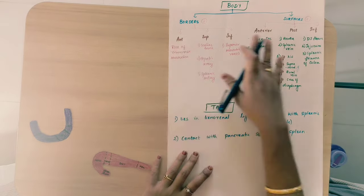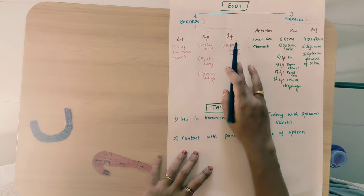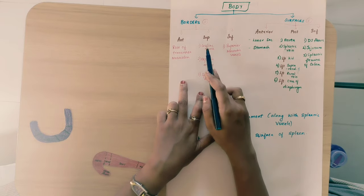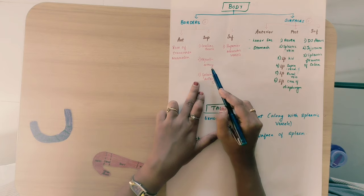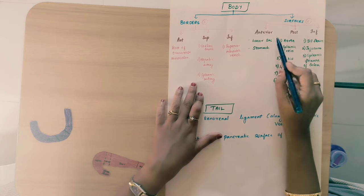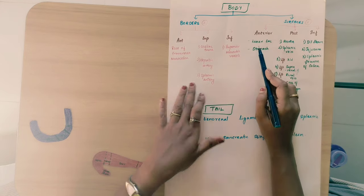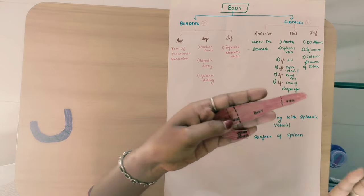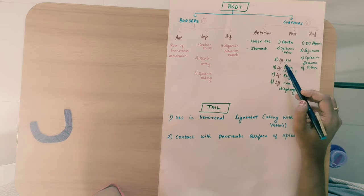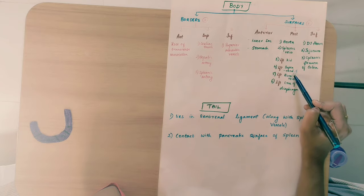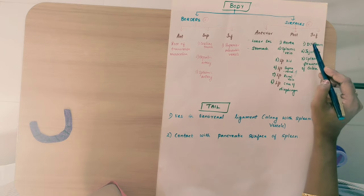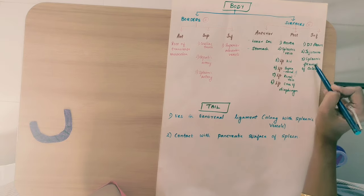So in the body there are three borders and three surfaces: superior, anterior, and inferior borders. The superior border relates to the celiac trunk (hepatic and splenic arteries), the anterior border to the root of the transverse mesocolon, and the inferior border to the superior mesenteric vessels. The anterior surface relates to the stomach and lesser sac; the posterior surface to the aorta, splenic vein, left kidney, left suprarenal gland, left renal vein, and left crus of the diaphragm; and the inferior surface to the duodenojejunal flexure, jejunum, and splenic flexure of the colon.